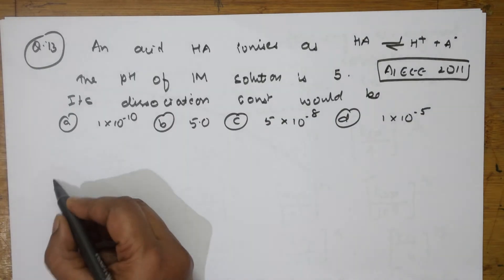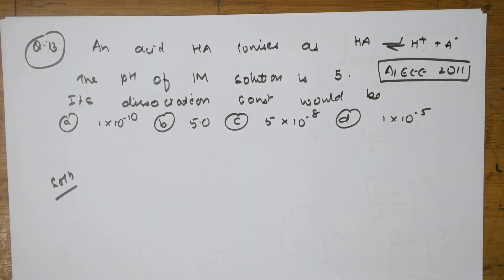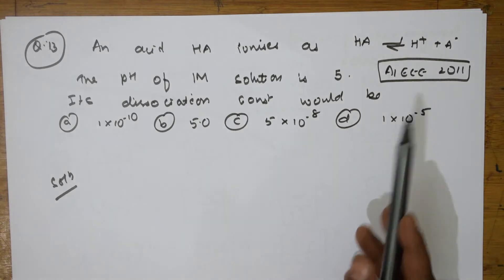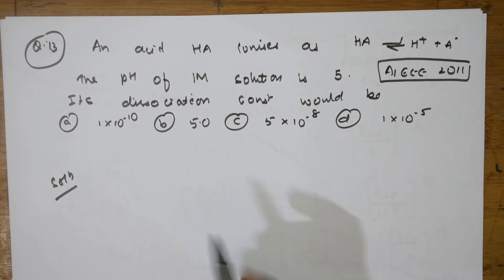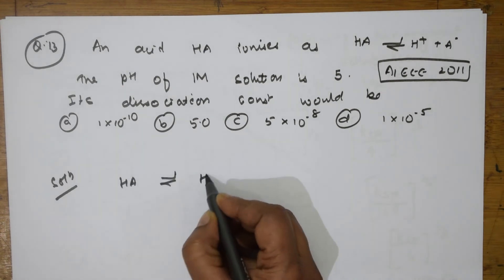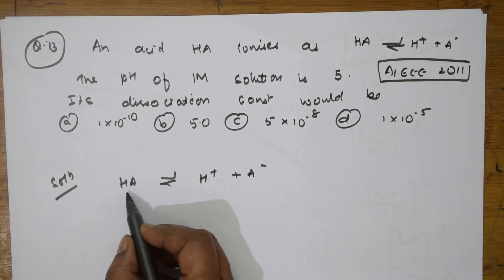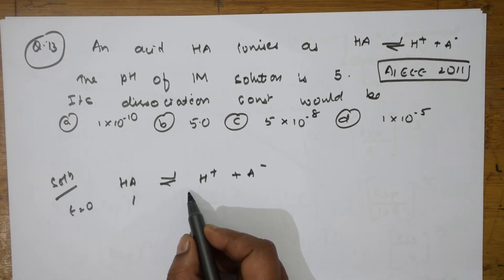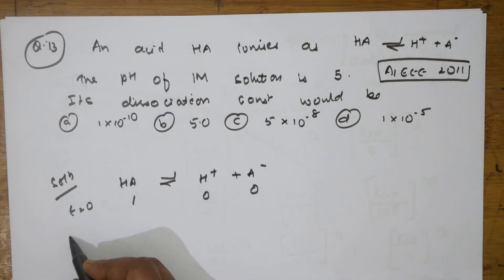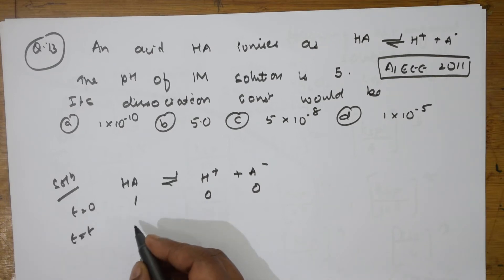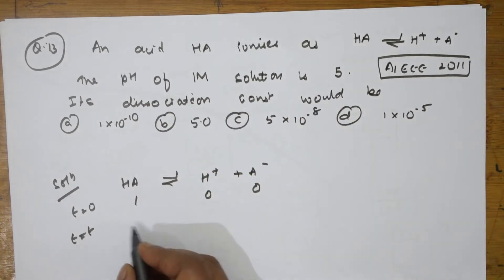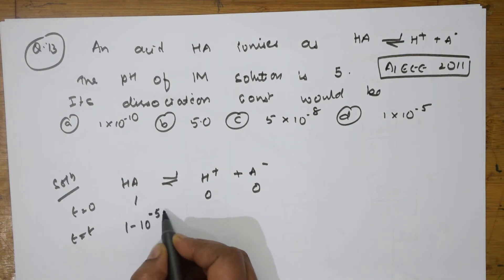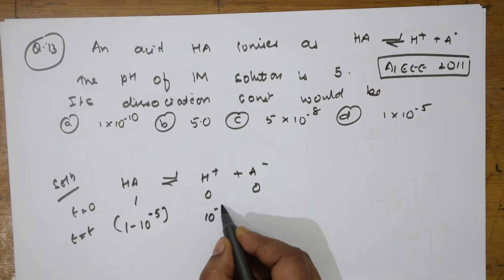Next question: an acid HA ionizes as HA → H⁺ + A⁻. The pH of a 1 molar solution is 5. Its dissociation constant is to be found. This is a 2011 AIPMT equation. Write the reaction: at t=0, concentration of HA is 1 molar; H⁺ and A⁻ are zero. Since pH is 5, H⁺ = 10⁻⁵.